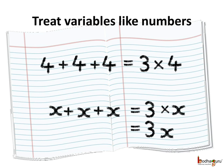The properties of variables are like numeric numbers only. For example, we know that repeated addition can be written as multiplication. Same way, if we have a variable x, then x plus x plus x is equal to 3 times x and we write it as 3 multiplied by x or in short 3x.